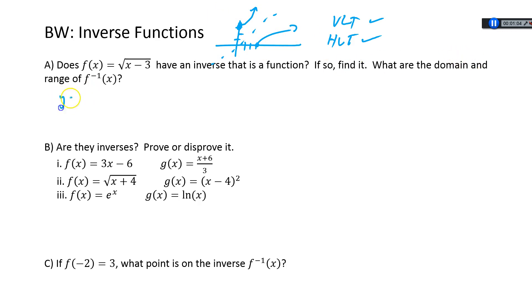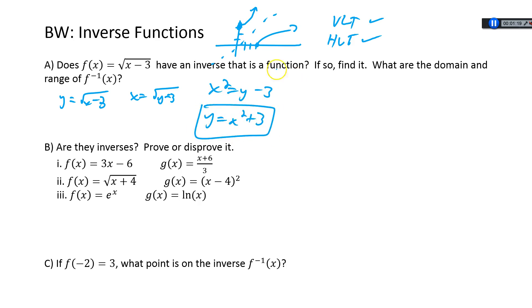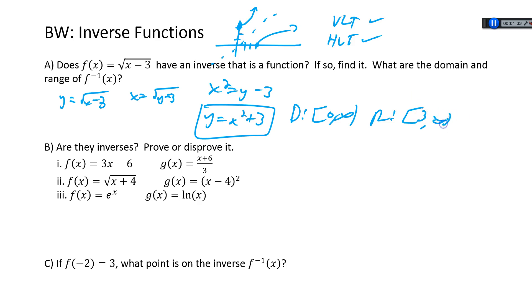So let's find it. We're going to change f(x) to y, so we have y equals root (x minus 3). Switch the x and y: x equals root (y minus 3). Solve for y — square both sides: x squared equals y minus 3, then add 3: y equals x squared plus 3. Notice in our picture it's only half of the parabola, so our domain is going to be whatever the range was of our original function, which is [0, ∞), and the range is [3, ∞), which was our original domain.